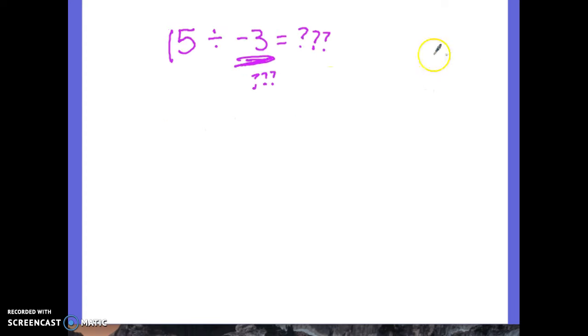So we know that 15 divided by 3 is 5, so that'll be a negative 5. If you see one negative sign and one positive, you know the answer is going to be negative. We do not need to worry which one the negative sign is on.